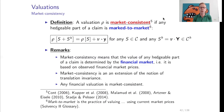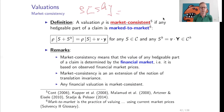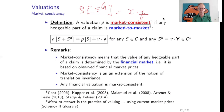Indeed, for a hedgeable claim SH, if rho is normalized we can write rho of SH as rho of 0 plus SH, which equals the discounted value of the hedge, nu times Y. So if our valuation is market consistent, the value of a hedgeable claim is exactly the price of the hedge.